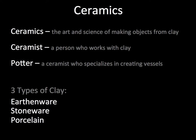Another part of sculpture is ceramics — one of the oldest art forms we have. The definition of ceramics is the art and science of making objects from clay. A ceramist is a person who works with clay. A potter is a particular type of ceramist who specializes in creating vessels — things meant to carry things, like plates, bowls, and cups. The three types of clay we'll look at are earthenware, stoneware, and porcelain.